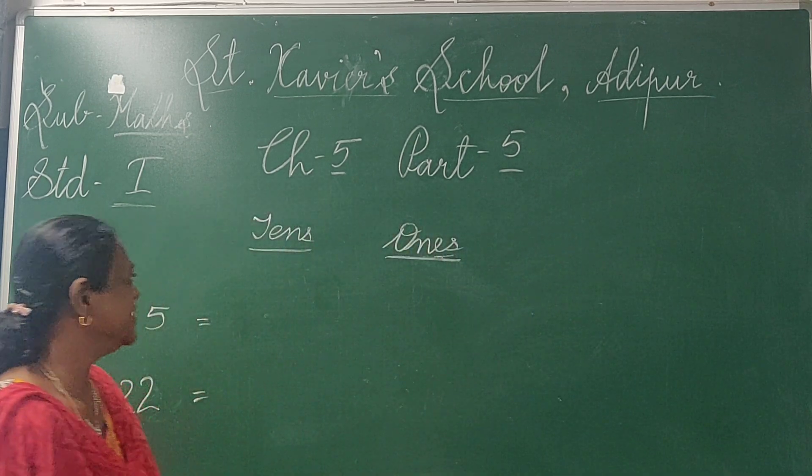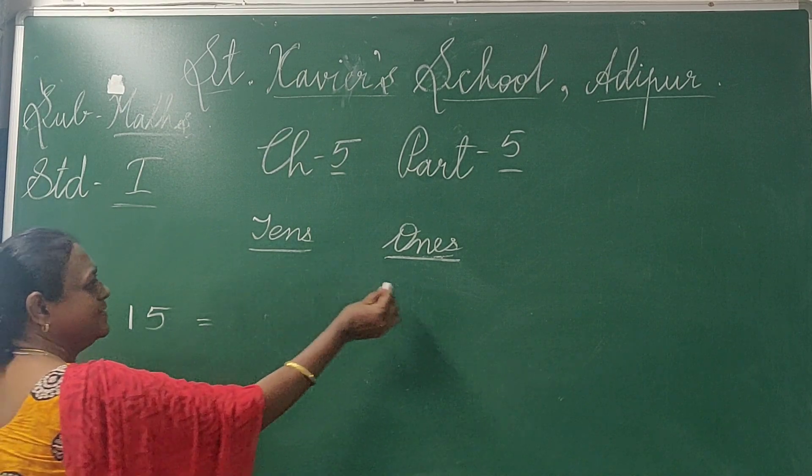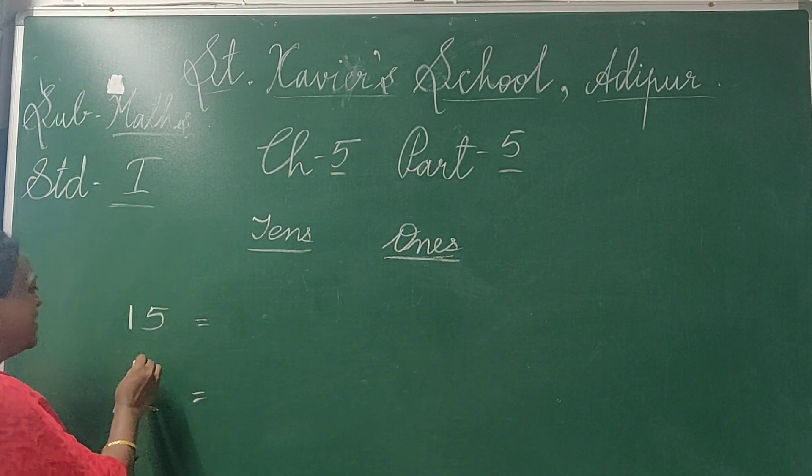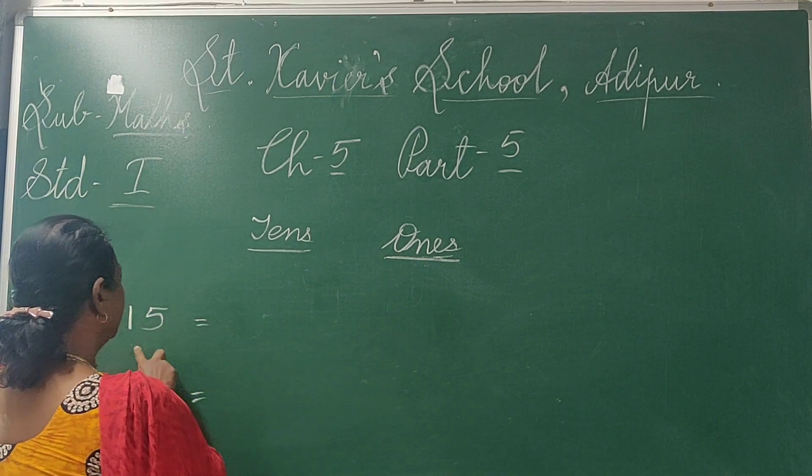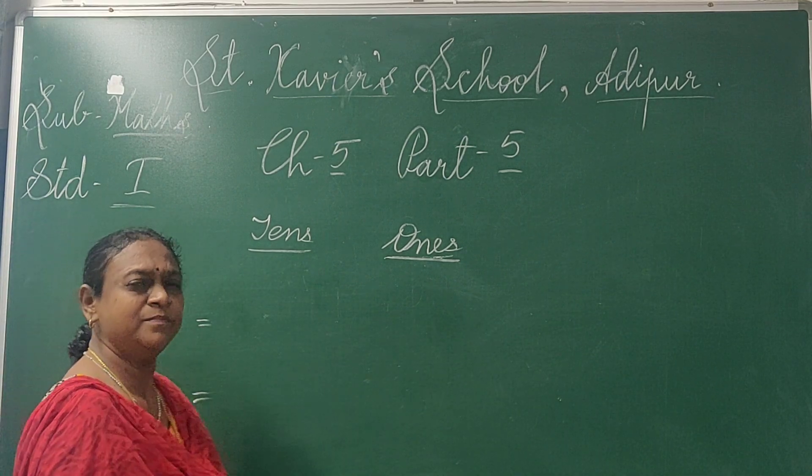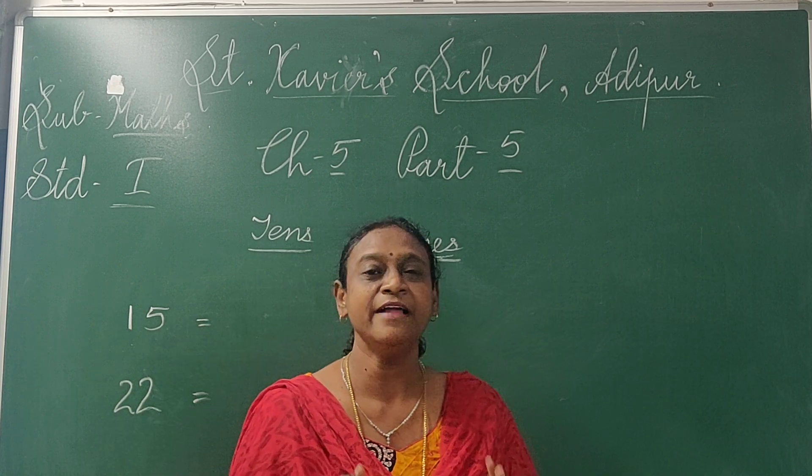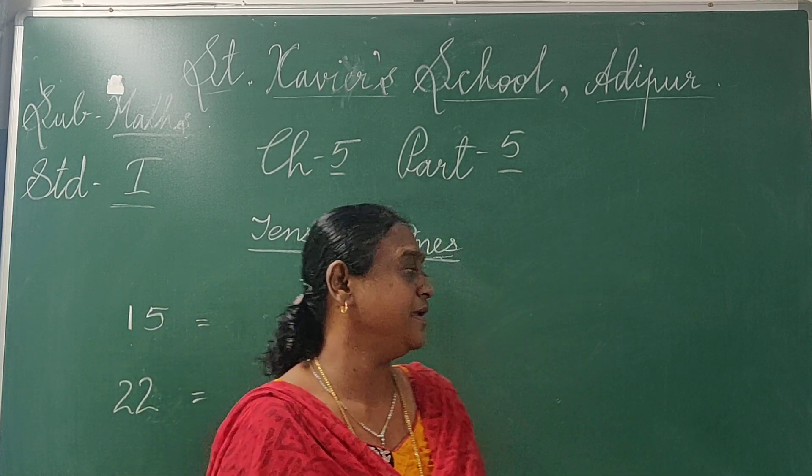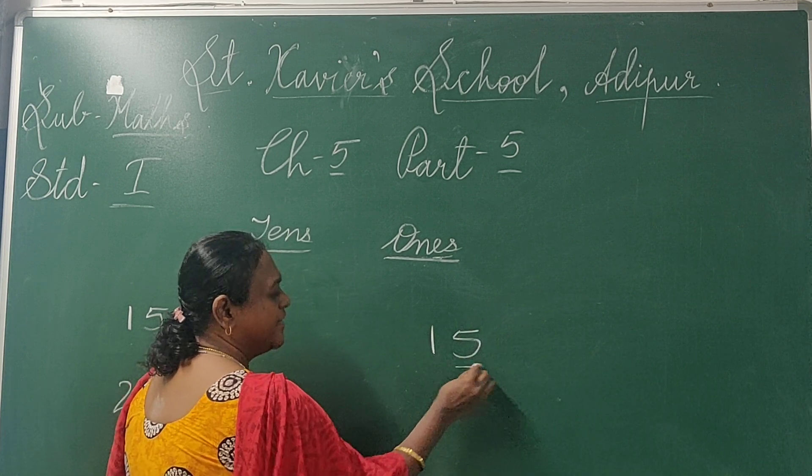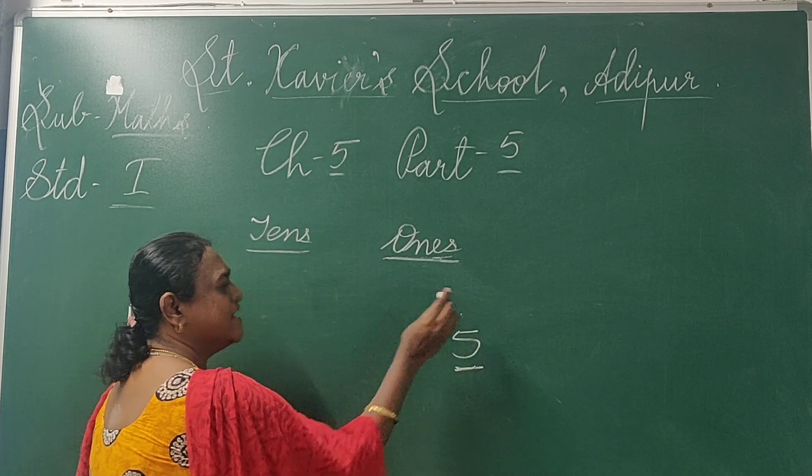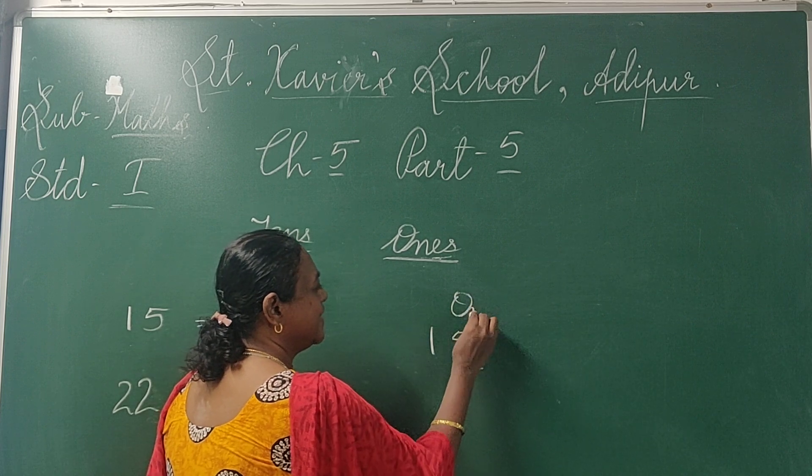Okay children, now see. This is tens and this is ones. Here I've written 1, 5, 15. Okay, 15 means one group of 10 and 5. Now what will we do? See, this is 15. Right side mein jo hota hai ise hum ones kehte. Right side jo hai we write ones.